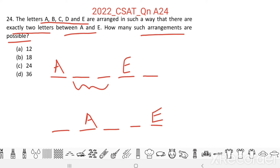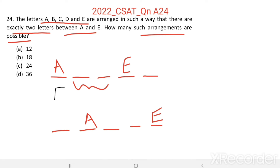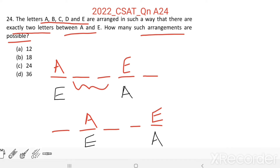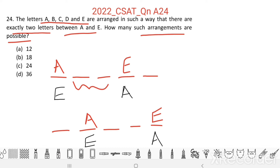We can also swap A and E. Instead of A in the first place, we keep E there, and then exactly after two places, in the fourth place, we keep A. Similarly, we can keep E in the second place and A in the fifth place. So A and E can be arranged in each of these two position pairs in two ways.